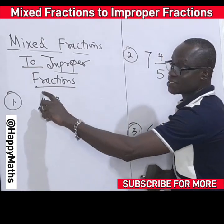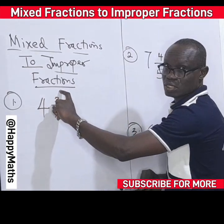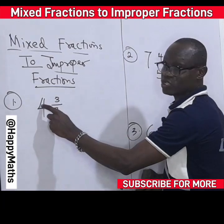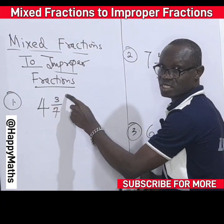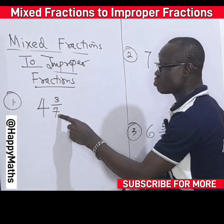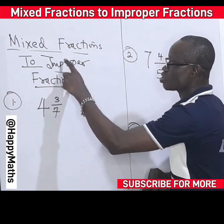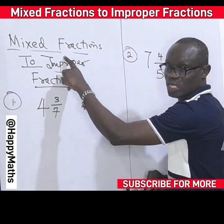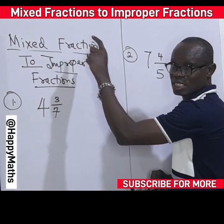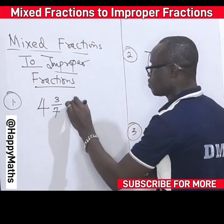Now, this is a whole number together with an improper fraction. 4 is the whole number, 3 is the numerator, 7 is the denominator. Now we want to convert this to an improper fraction. An improper fraction has a numerator bigger than the denominator.